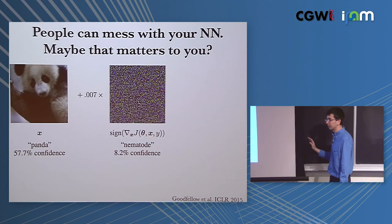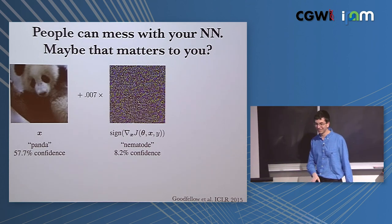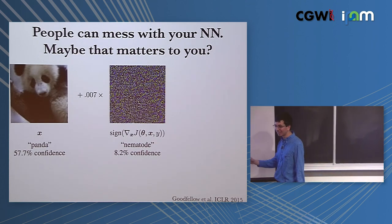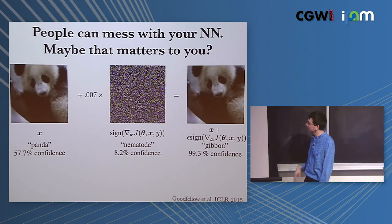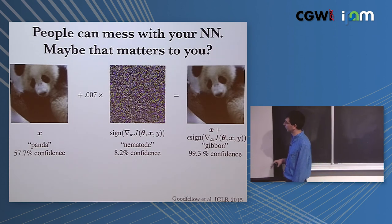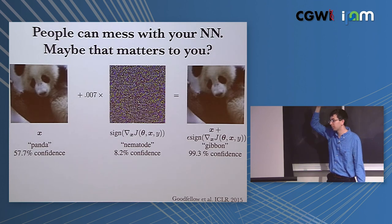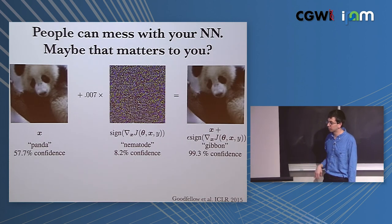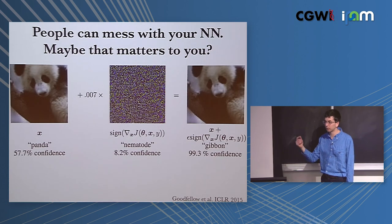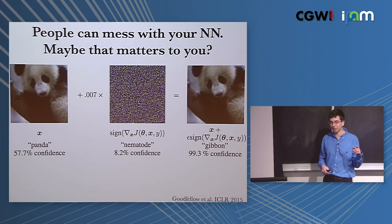People can really mess with neural networks if they want to. The classic example: the neural network is confident that the left image is a panda. You add seven-one-thousandths of a noise image to it - the result still looks like a panda to humans, but the neural network thinks it's a gibbon. This was recently repopularized with adversarial examples for humans. More concretely, there are adversarial sticker patches that cause a neural network to perceive a banana on a table as a toaster.